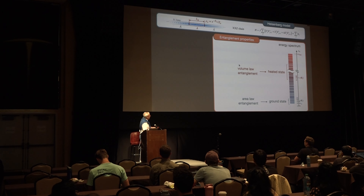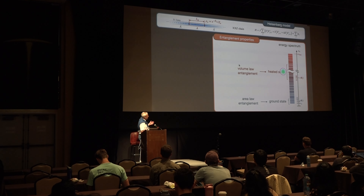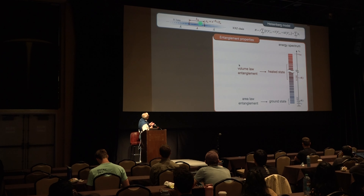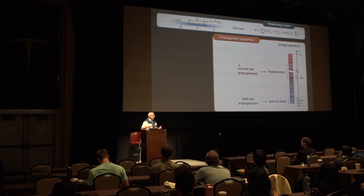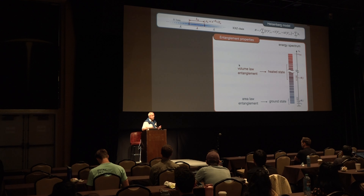If you go up to the highly excited states, the subsystem would be in a thermal state, and of course you expect volume law entanglement. This is what you learned in your course on statistical mechanics: the entropy scales like the volume of the whole thing, not like the surrounding area. These things can be seen in an experiment.